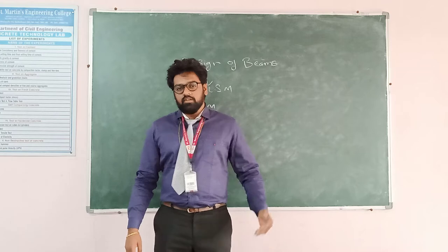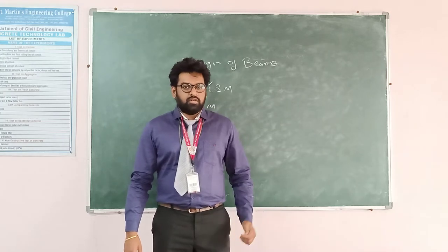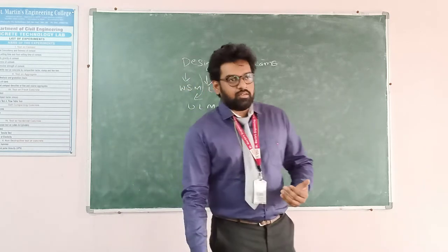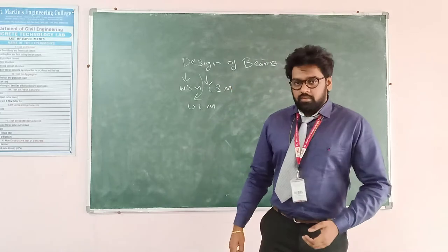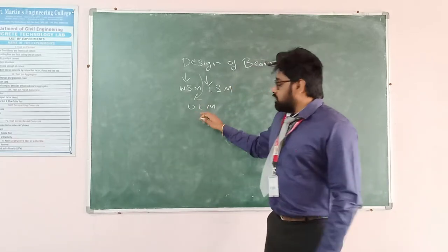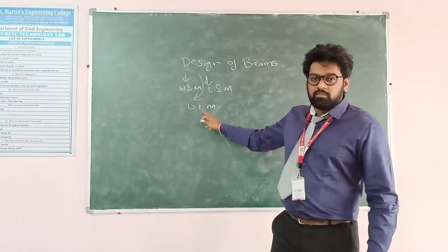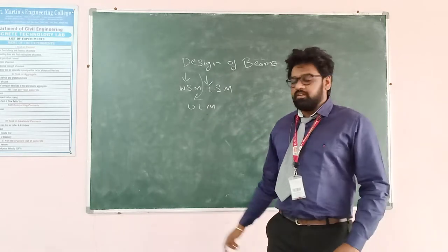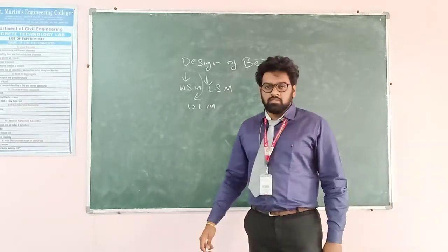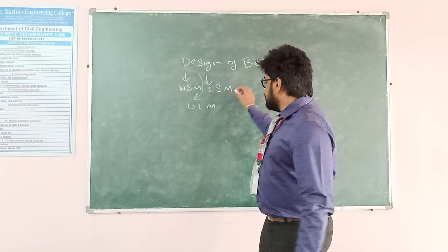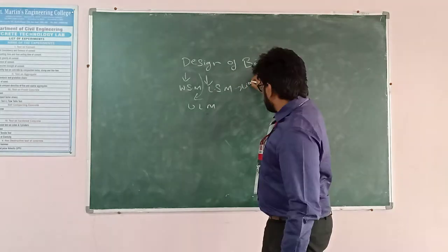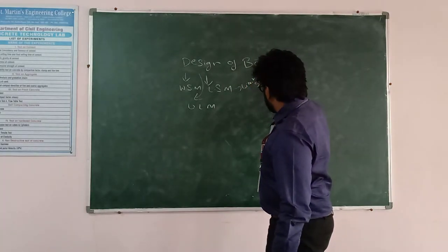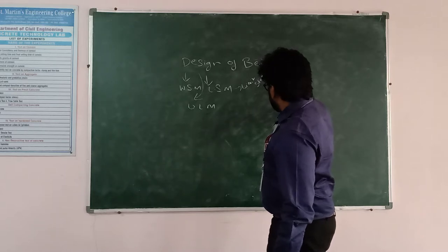Working Stress Method is the older, traditional method. Ultimate Load Method came after Working Stress Method. This method is essentially a failure method and was used for around 10 years. Now the modern method is the Limit State Method.